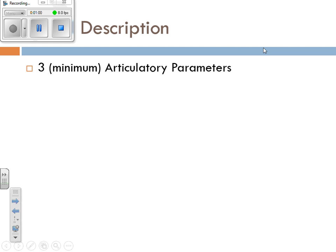We're going to talk about three main articulatory parameters — there are more than this, but when you describe a vowel you usually give at least these three at the bare minimum. You're going to talk about how high the vowel is.